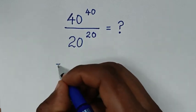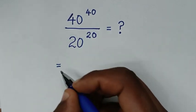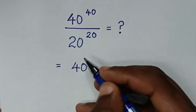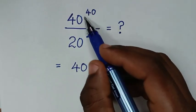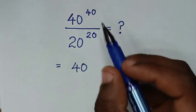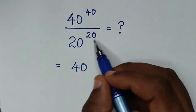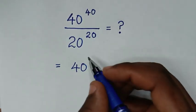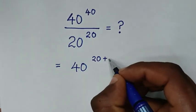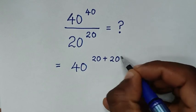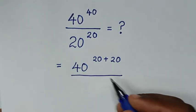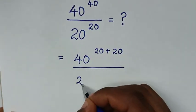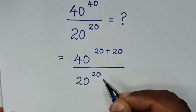So it will be equal to 40 power of 40. We will make this power of 40 have a common power of 20. So power of 40 is the same as power of 20 plus 20, then over this exponent which is 20 power of 20.